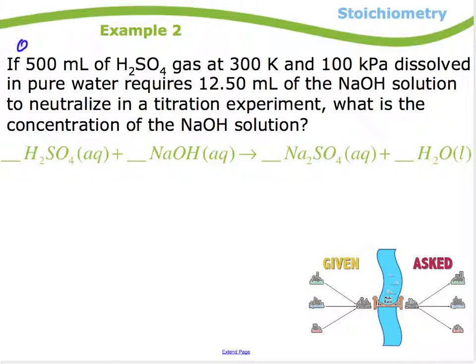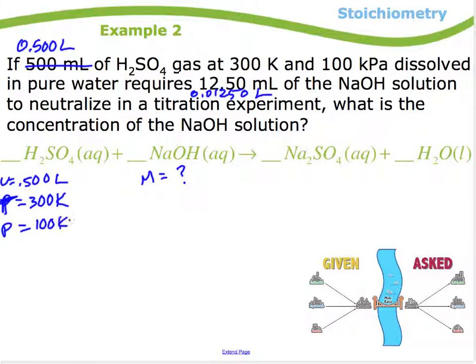500 milliliters, I'm going to change that to liters right away, 0.500 liters of H2SO4 gas at 300 K, 100 kilopascals. Dissolved in pure water requires 12.50 mL, let me change that, 0.01250 liters of the NaOH solution to neutralize. What is the concentration of the NaOH solution? Okay, so they're looking for molarity of NaOH. They gave me 0.500 liters of H2SO4, and that's a volume. Oh, they also gave me a pressure there, 100 kilopascals, 300 Kelvin, and they gave me, oh no, that's temperature. Temperature. And they gave me a pressure of 100 kilopascals. And they gave me a volume over here of 0.01250 liters.